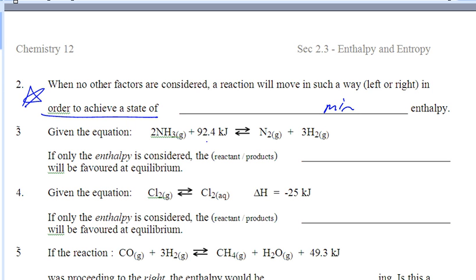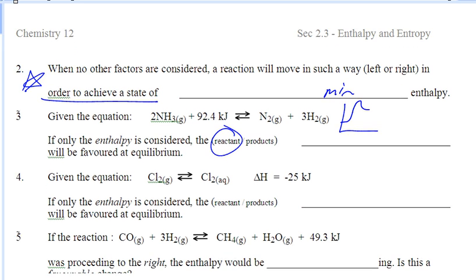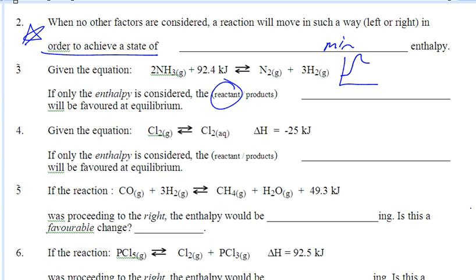Here's another example — it's endothermic. It says if only the enthalpy is considered, then are the reactants or products favored? So if minimum enthalpy is favored and this is endothermic, the reactants have the lowest energy, so the reactants are going to be favored. Species want to have minimum enthalpy, and they'll do whatever it takes to get minimum enthalpy.